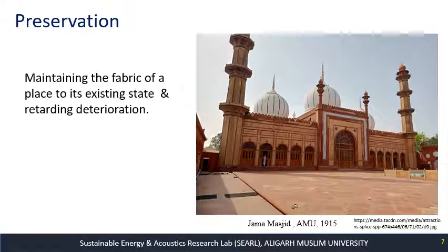I will go through each process of conservation through examples. Let me take a heritage building at Aligarh Muslim University — a mosque built in 1915. Preservation means maintaining the fabric of a place in its existing state and retarding deterioration. The facade of the building is made of brick and stone, and to preserve that stone, a transparent chemical coating was applied to it to prevent the aging and deterioration of the sandstone.